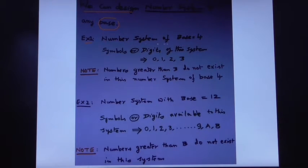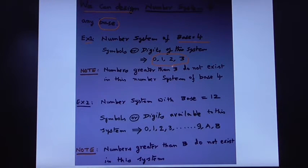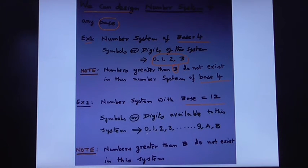For example, a number system of base 4 consists of digits 0, 1, 2, and 3. Note that numbers greater than 3 do not exist. A number system with base 12 consists of digits starting from 0 to B. Numbers greater than B do not exist in the base-12 number system.